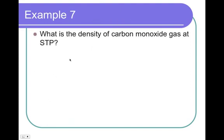So, number seven, what is the density? There's that density word again. So, we're using MP = DRT of carbon monoxide gas at STP. Well, you look at this question and go, wait a minute, there's no numbers in it. Oh, yes, there is. Carbon monoxide gives us our molar mass. STP gives us everything else.